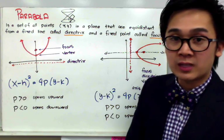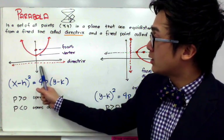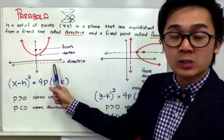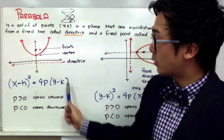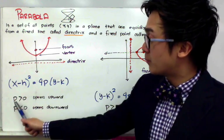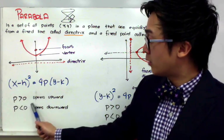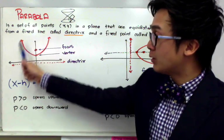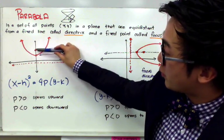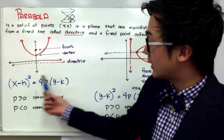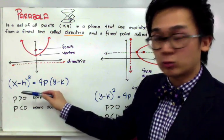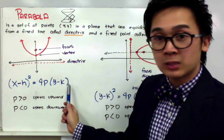There are two types of equations that can be formed when working with a parabola. When the parabola is opening vertically, the standard equation is (x − h)² = 4p(y − k), where p is the distance between the focus and the vertex. The p value is positive when the parabola opens upwards, and negative when it opens downward.